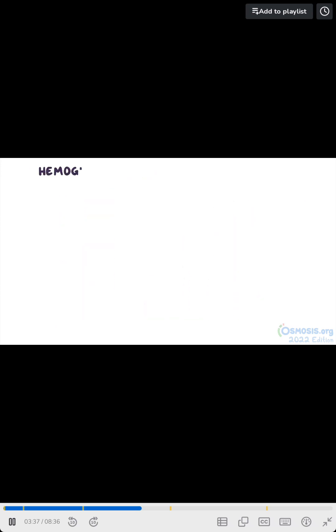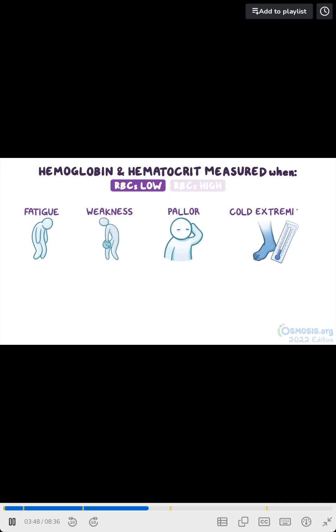A client's hemoglobin and hematocrit will be measured when there are signs or symptoms of low or high RBCs. If RBCs are low, signs and symptoms can include fatigue, weakness, pallor, cold extremities, tachycardia, palpitations, and chest pain.